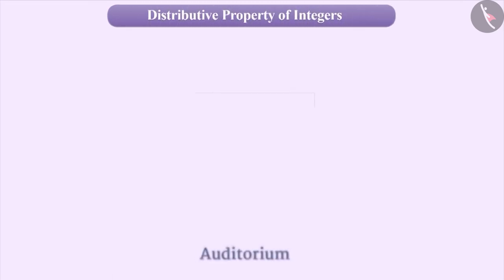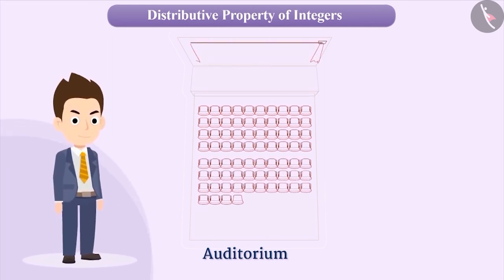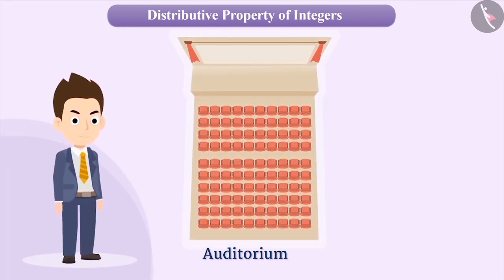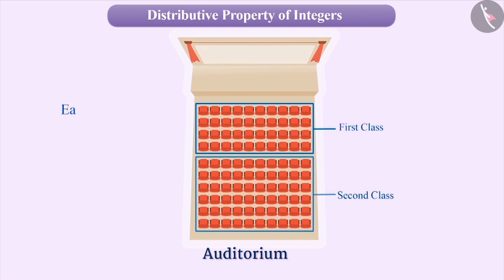A huge auditorium was to be constructed, for which an engineer prepared a sample of seating arrangement. According to the sample, the auditorium will have 4 first class rows and 6 second class rows. If each row has 10 seats, how will we find out how many total seats will be there in the auditorium?